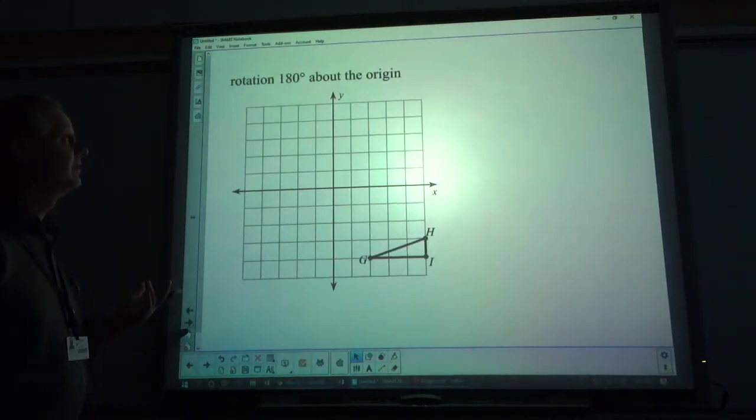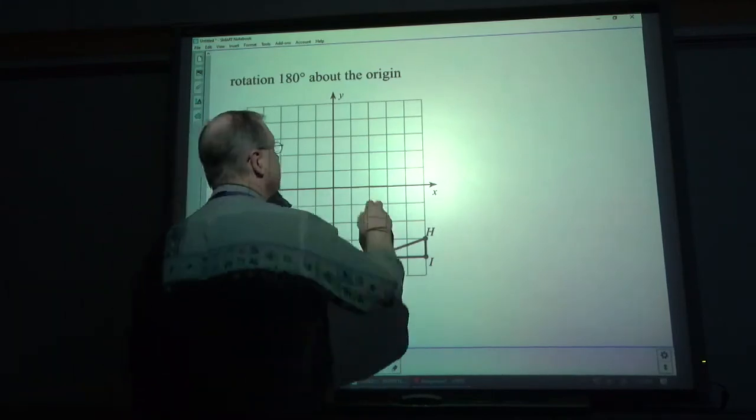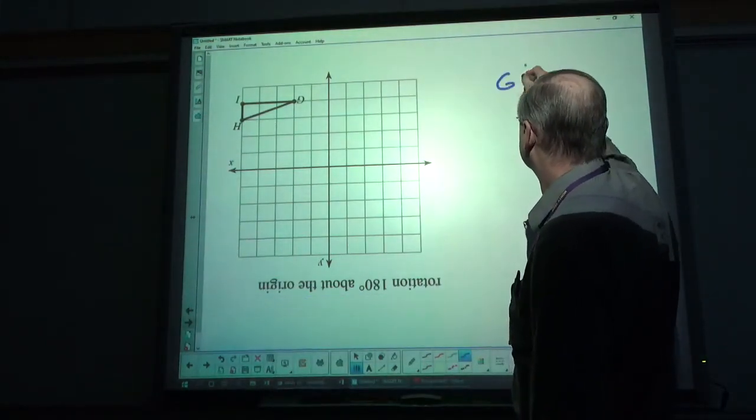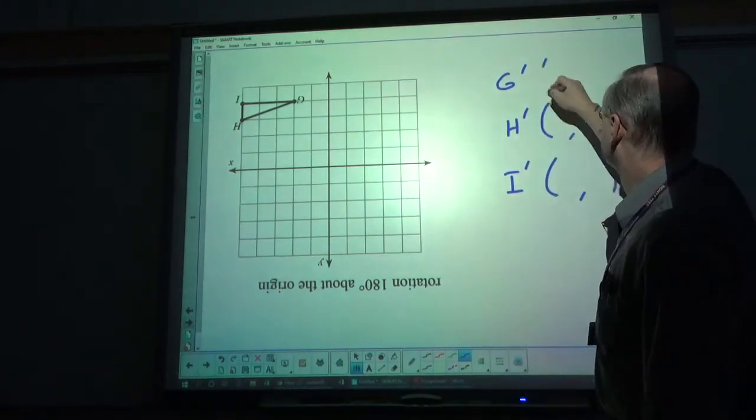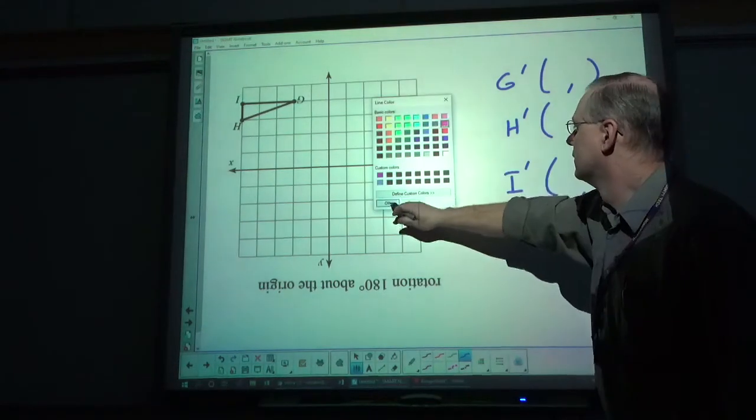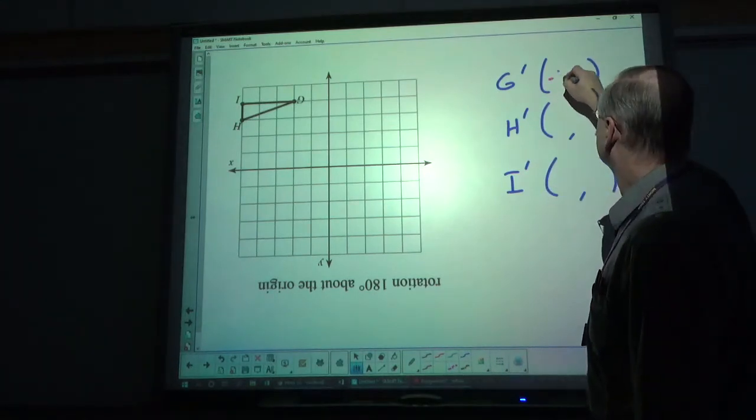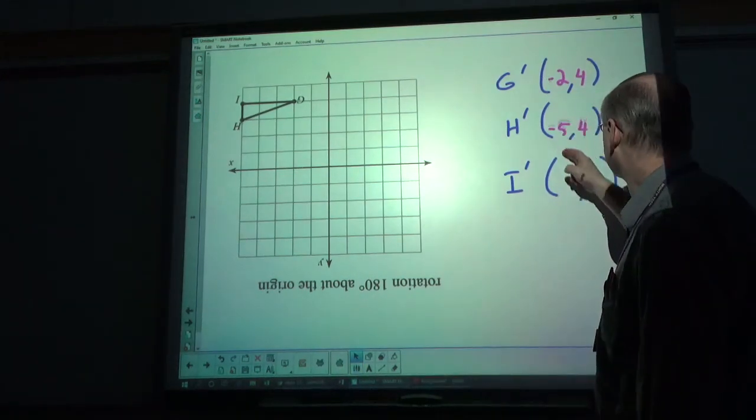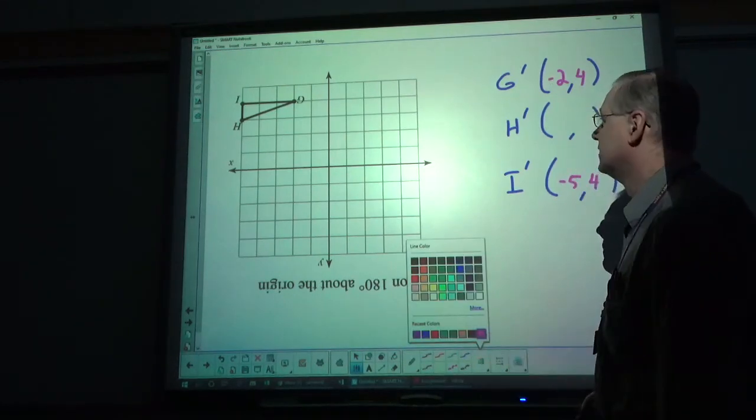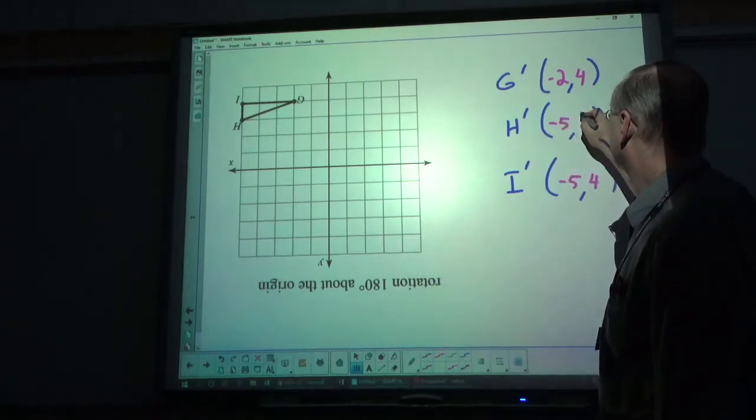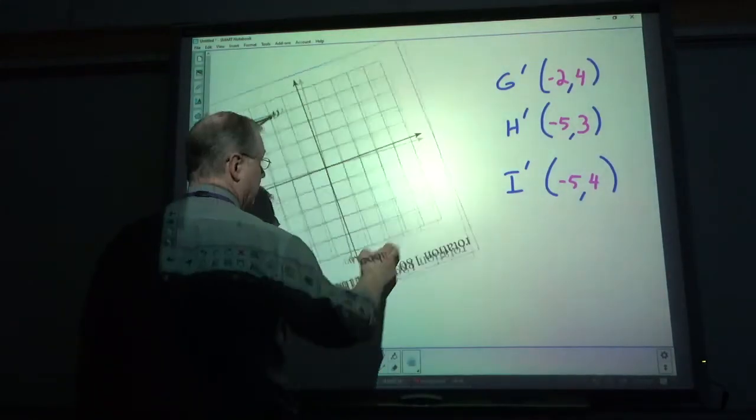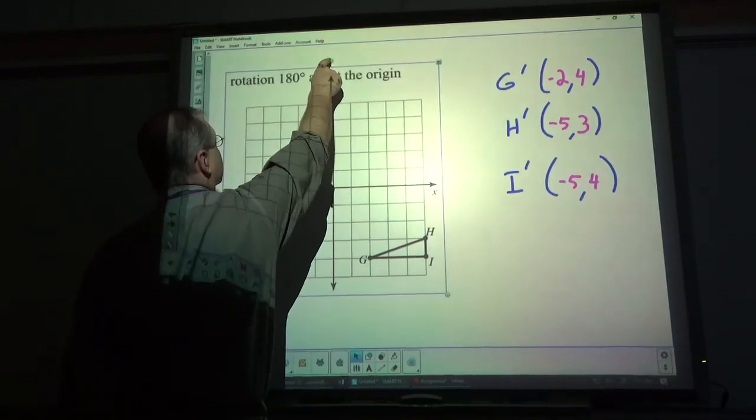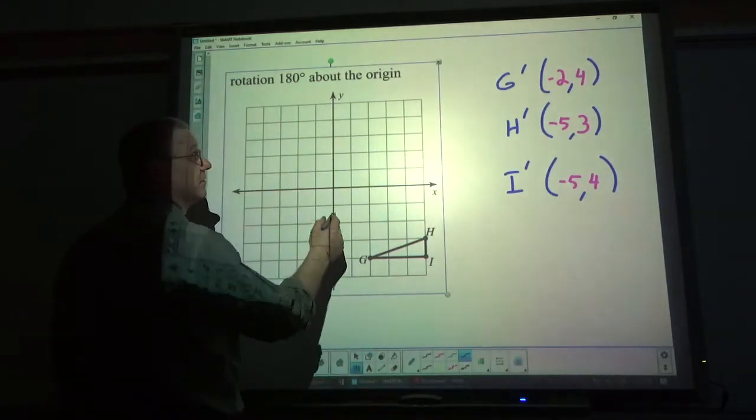You give this one a try. And that'll wrap us up for today. We'll check this out. 180 degrees. G, H, and I. G is at negative 2, 4. I is at negative 5, 4. And H is at negative 5, 3. Let me turn this back. Boy, it's fussy. Close enough.